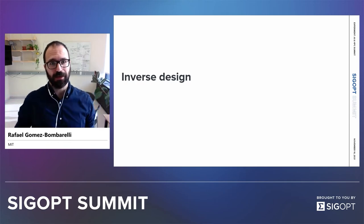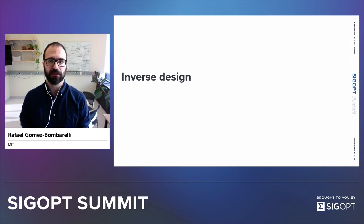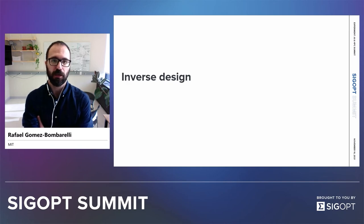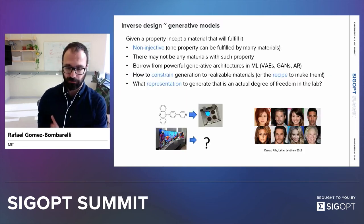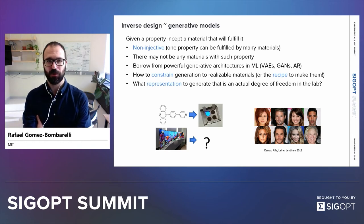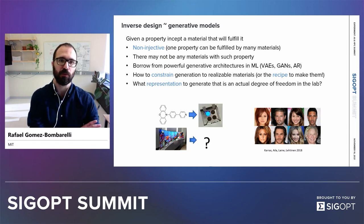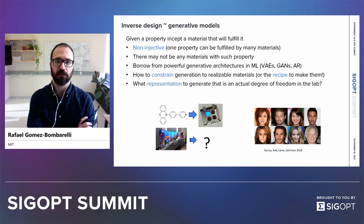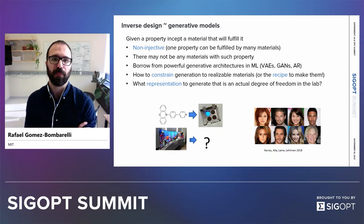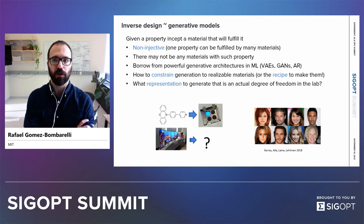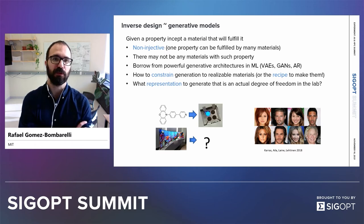Everything I've talked about so far has been about screening — making a forward model that is accurate and predictive, then running it over a long list of candidates. That's related to property prediction: given an input, we predict the output for the property we care about. But that's not actually the task I set out to solve when I said we need new materials. Ideally, we want the computer to help us do the opposite: design for a target property. Given my desired property, what is the material that fulfills it? It's an inverse problem that might not be bijective — it's conditioned on the property I want, what arrangement of matter will give me that, if that's even possible.